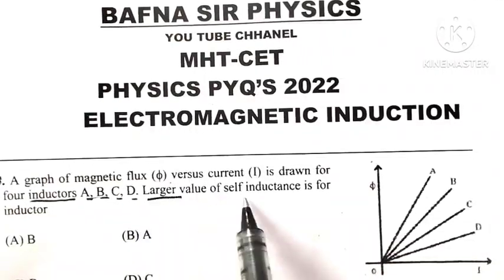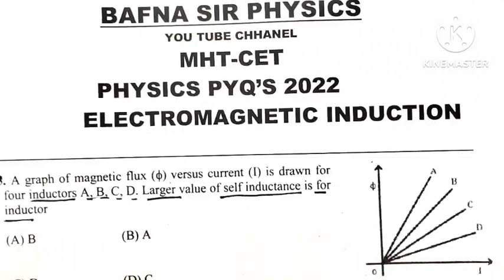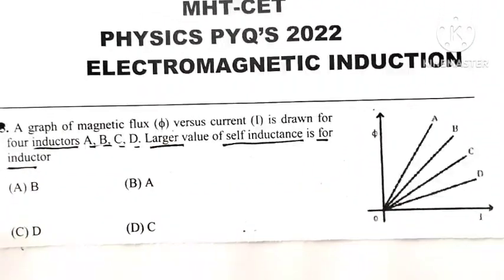Larger value of self-inductance is for which inductor? So here we are having a graph.